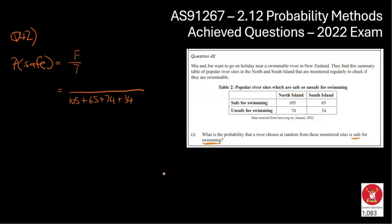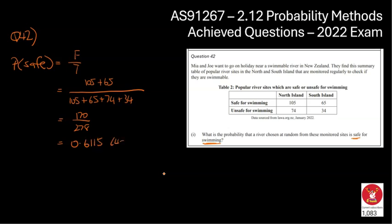Of these rivers, which are the safe ones? That's going to be the ones up the top — that's 105 and 65. So that's my numerator: 105 plus 65, which gives me 170. Adding up all the rivers on the bottom gives 278 in total. Putting that into my calculator as division, I'm getting 0.6115, rounded to 4 decimal places. So about 61% of these rivers are going to be safe for swimming.